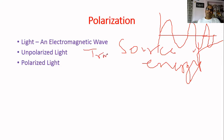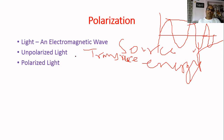Transverse waves are those waves in which particles are oscillating back and forth, up and down, vibrating perpendicular to the direction of motion. So this particular light wave is moving in one direction but its particles are moving up and down. That is called a transverse wave. Light is a source of energy and it is an electromagnetic wave — that is very necessary for students to understand.